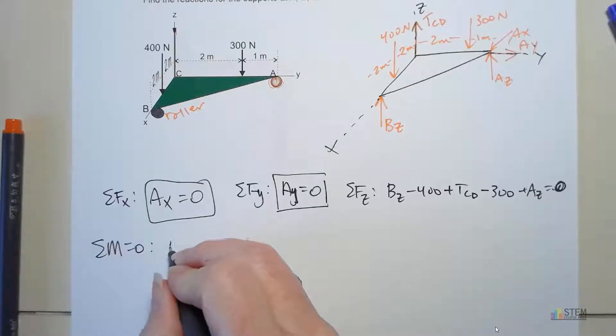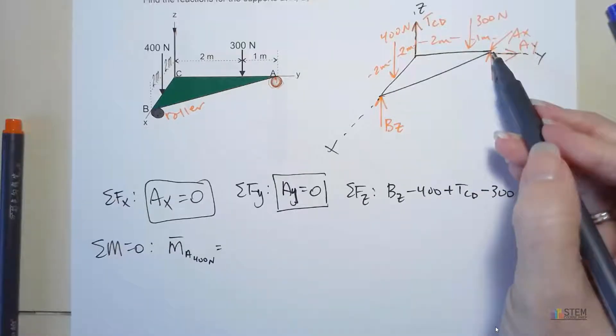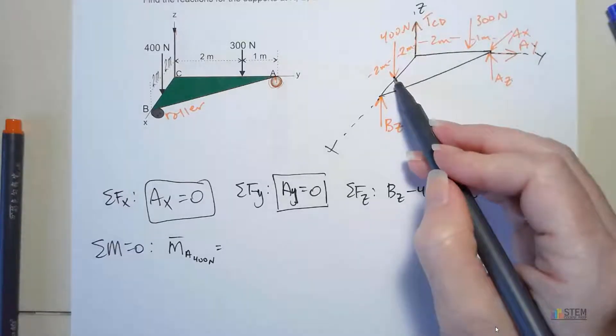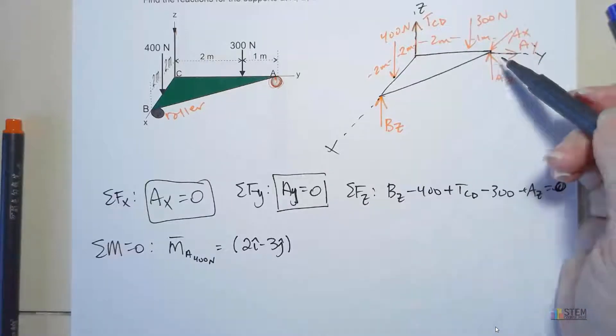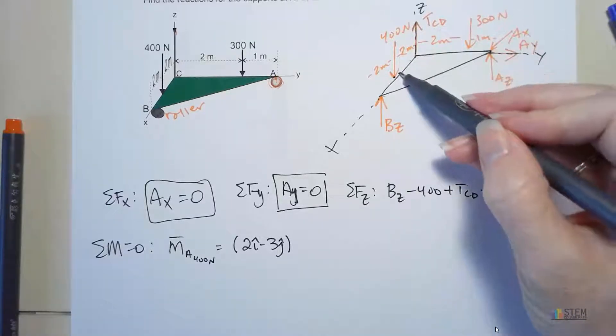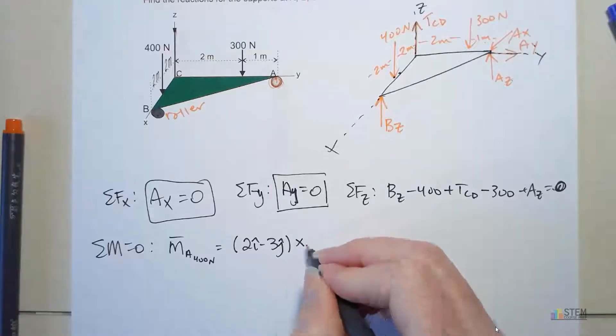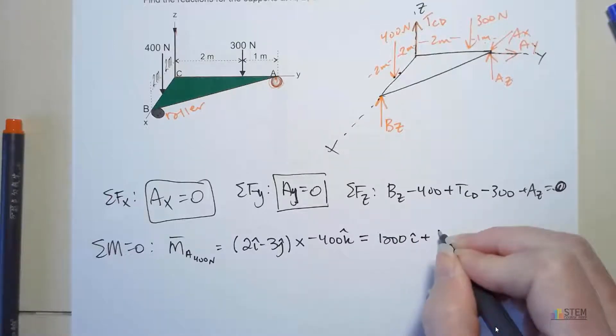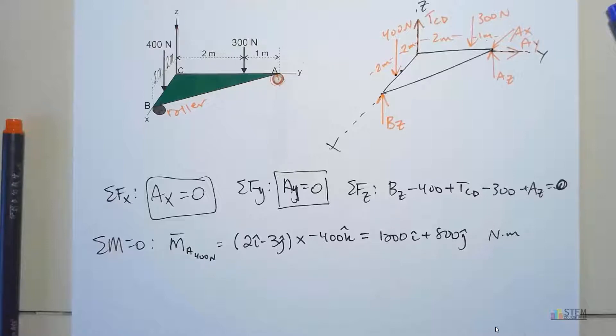Let's go ahead and I'm going to find the moment about A due to the 400 newton force first. So that's for this force. I want the moment about this point. I'm going to use vectors to do this. I need a position vector that goes from here over to here. That position vector is going to be 2I minus 3J because I'm going from here to here. So this is 2I and then 1 plus 2, that's 3J, going to the left so it's negative. We're going to cross that with negative 400K. That gives me 1200I plus 800J, and that's going to be newton meters.